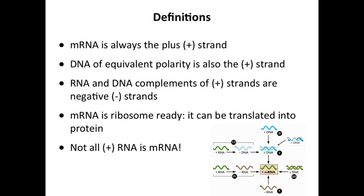In the Baltimore scheme, the plus and minus signs refer to the polarity of the nucleic acid with respect to mRNA. For example, single-stranded plus-strand DNA viruses have a single strand of DNA with plus polarity — the same polarity as mRNA — but of course DNA cannot be translated. By looking at the kind of nucleic acid present, you can already deduce what viruses have to do to get to mRNA.